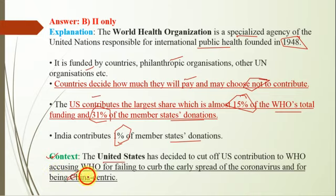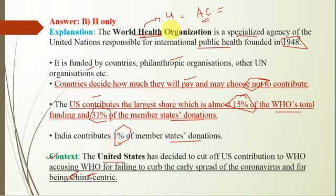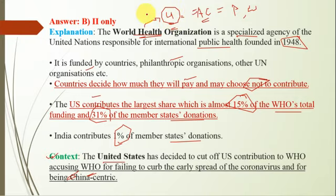If you haven't seen it, you can watch it on our playlist. We have already discussed WHO's funding, where there are 4 types of contributions. One of those is assessed contributions, which are mandatory for member states wishing to be members of WHO, and are calculated on the basis of the country's population and wealth. If you are following this series, you should know the 4 types of contributions. One is assessed contributions — write the remaining 3 in the comment section if you remember correctly. Now let's move on to the next question.